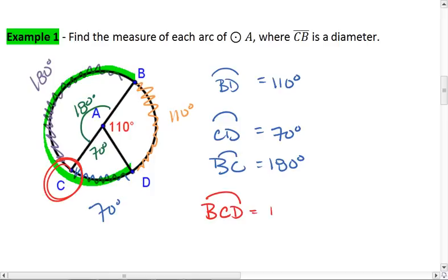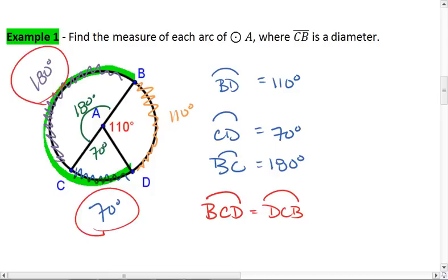We could have also written this as arc DCB. This whole arc is going to be 70 plus 180. So we see that this is going to be 250 degrees.